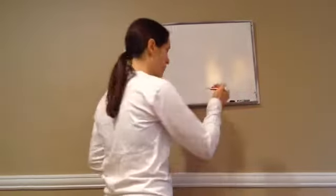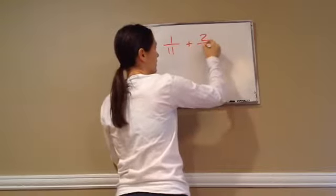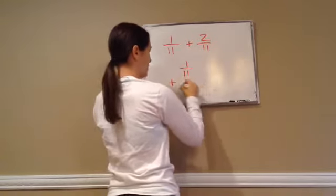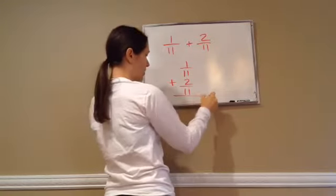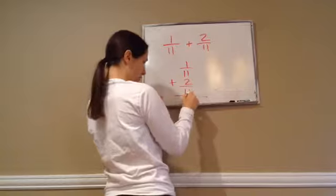So for example, if you saw 1/11 plus 2/11, you've been taught to write this vertically. And you would go on and take in your denominator, you do not add your denominators, hopefully you've learned that by now, but it needs to be stuck in your memory so you remember to do that.